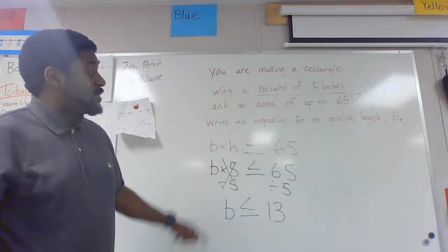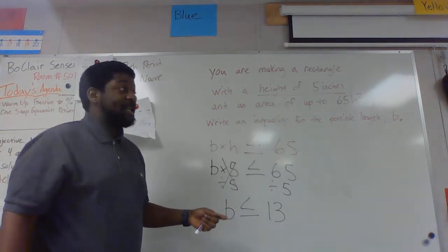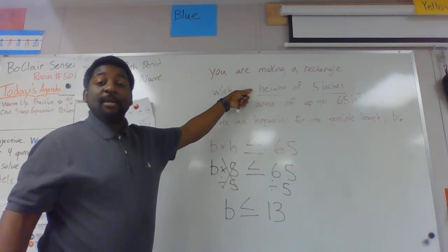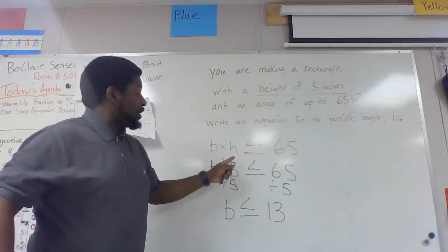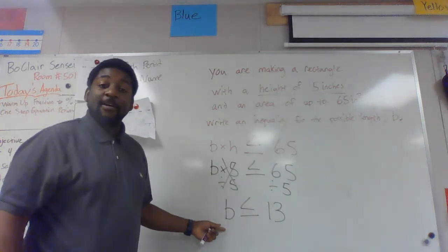Y'all if you didn't understand it the first time please watch this video again. Really you're going to set up your equation the exact same way that I did, find the height in your question, that's what you're going to substitute for h, and then you divide by that number on both sides to find the value for b.